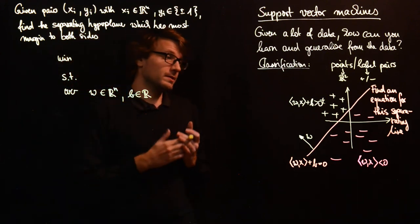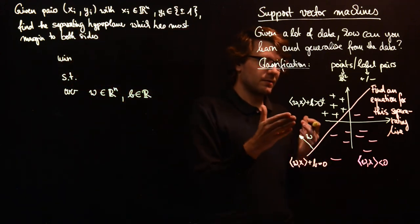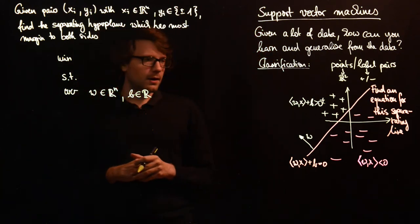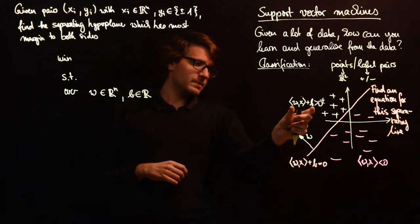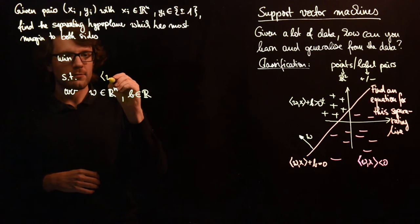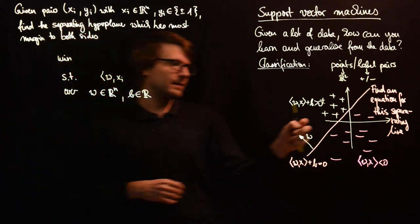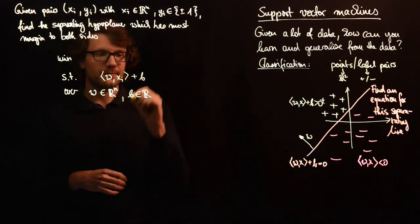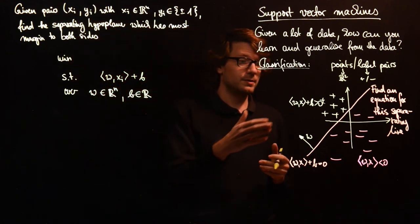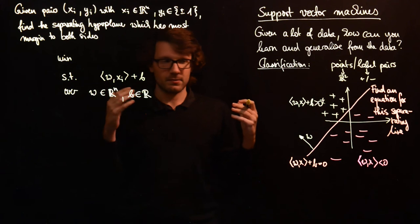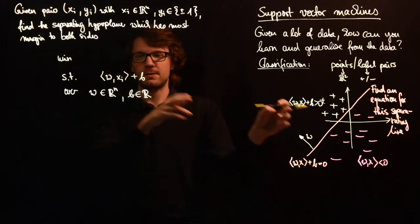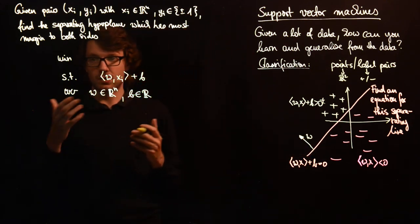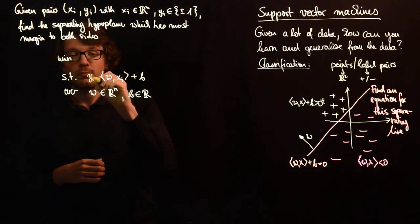And what we want to ensure is that all the points are on the right side. So how do we do this? So here we see whenever we multiply w with xi, one of these points, and add the bias, then we want to at least have the right sign of this expression. So if you have label plus one then this should be positive. And if you have a label minus one then this should be negative. So whenever you multiply this expression with yi...